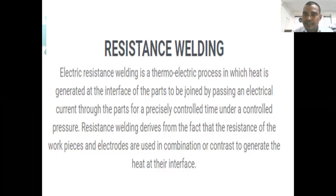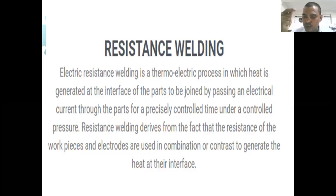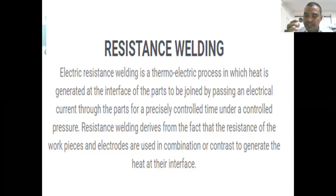When we discuss about resistance welding, you should have knowledge about the equation H equal to I square RT, because by the help of this equation you can understand how heat is generated in resistance welding. To repeat: in resistance welding, a low voltage — the voltage may be one volt — and a high current, which may be 50,000 ampere, passes through the joint for a very short time, such as 0.25 seconds. This high ampere heats the joint, and the heat generated is expressed by H equal to I square RT. I hope you can understand how resistance welding works.